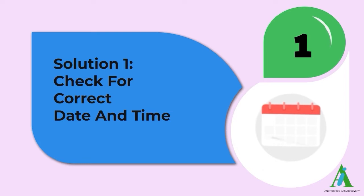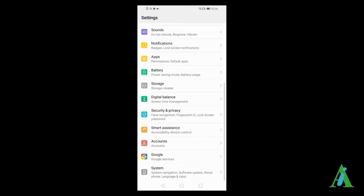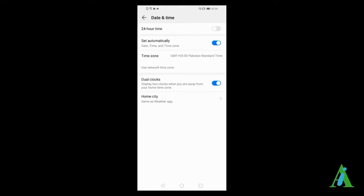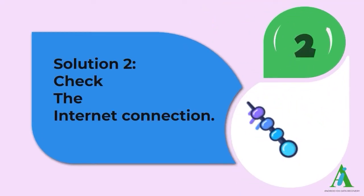Solution 1: Check for correct date and time. Incorrect date and time can display an error of SSL connection on Android devices. Therefore, you should always check whether the time and date are correct on both devices as well as the server side.